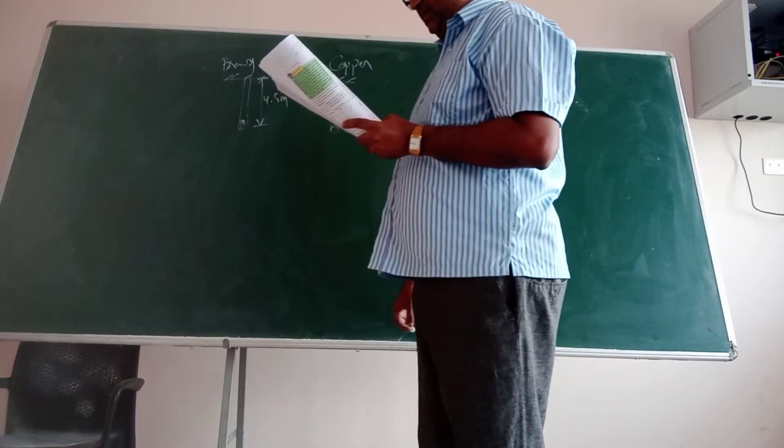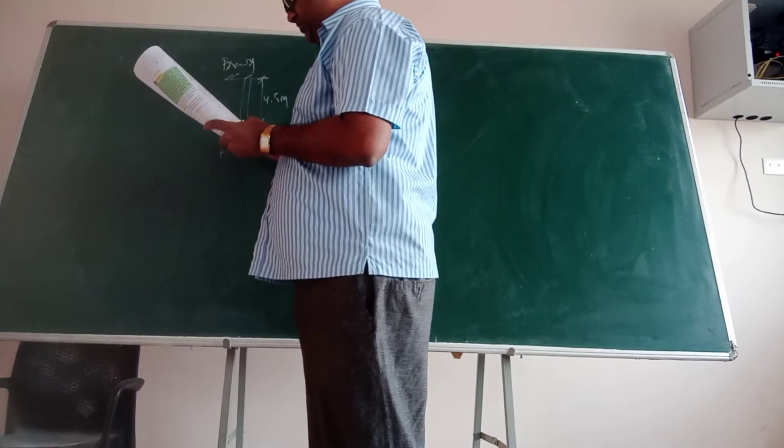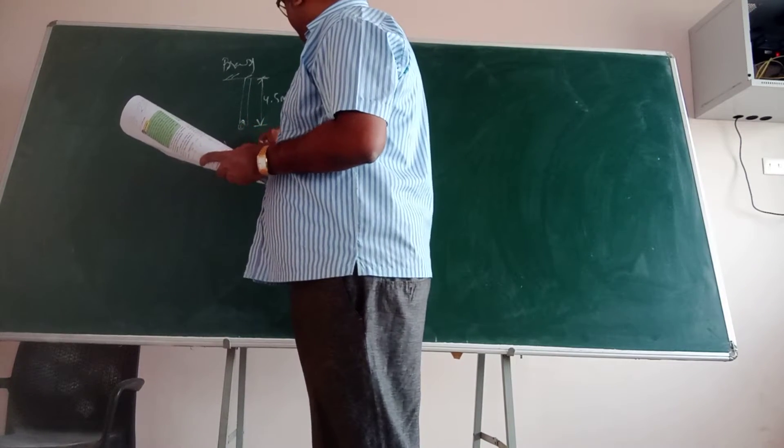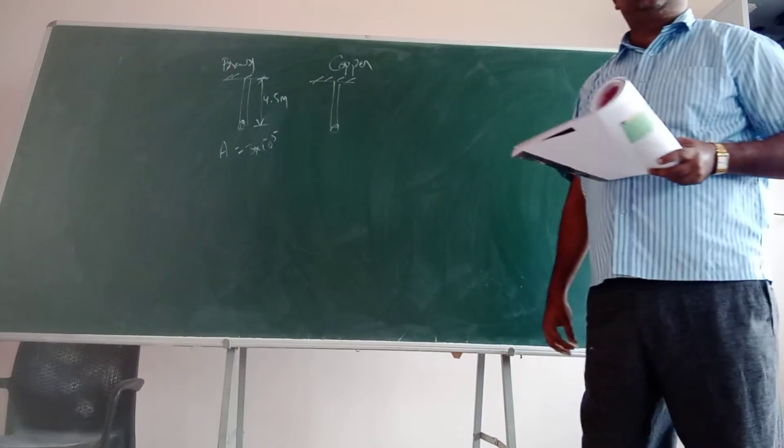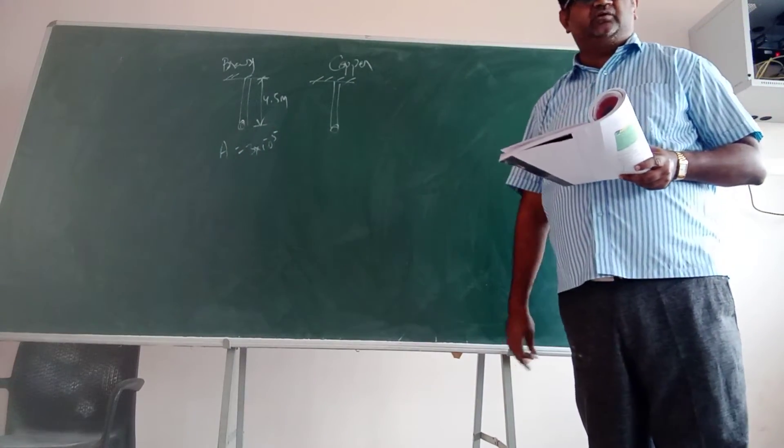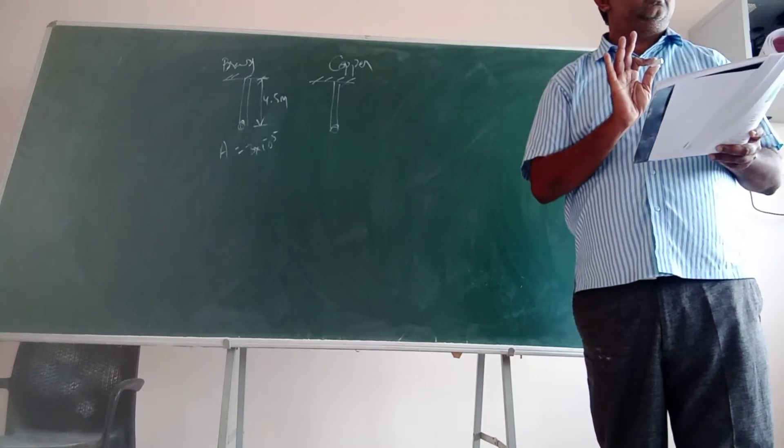Alright. And cross sectional area is here. How much? 3 into 10 to the power of minus 5. Usually they give it centimeter square. You should be able to convert that into meter square. Everyone knows how to convert? Anyone need doubt? Okay.